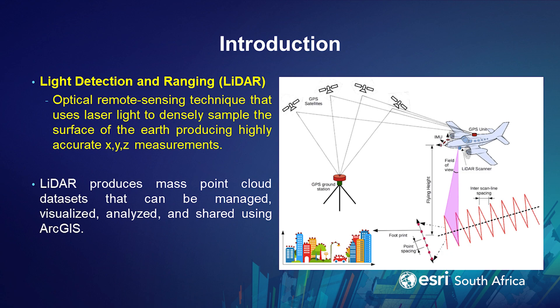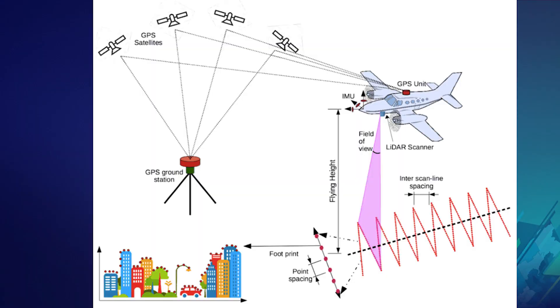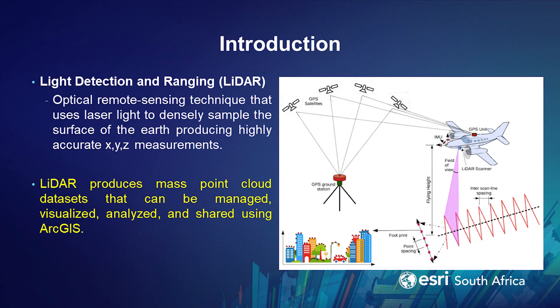LiDAR is an acronym for Light Detection and Ranging. This is a remote sensing technique that uses laser light to sample the earth's surface and produce accurate X, Y, and Z measurements. Certain components are required when capturing LiDAR data. This includes the collection vehicle, the laser scanner, and the GPS for positioning. This technique produces a mass point cloud which can be visualized, analyzed, and shared in ArcGIS Pro. This can also be used to create digital elevation models such as DTM and DSM.